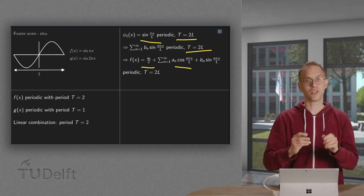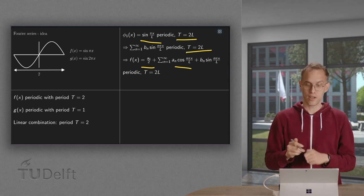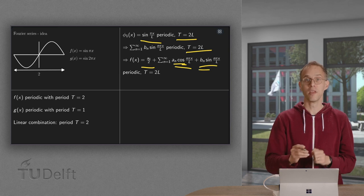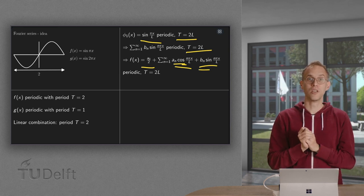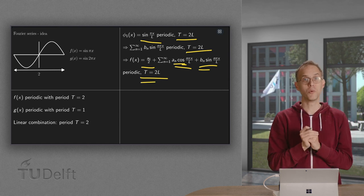If you have cosine n pi x over l, that one is also the same if you go 2l further. So this part is also periodic with period 2l. So your total function, your total combination, is some periodic function with period 2l.